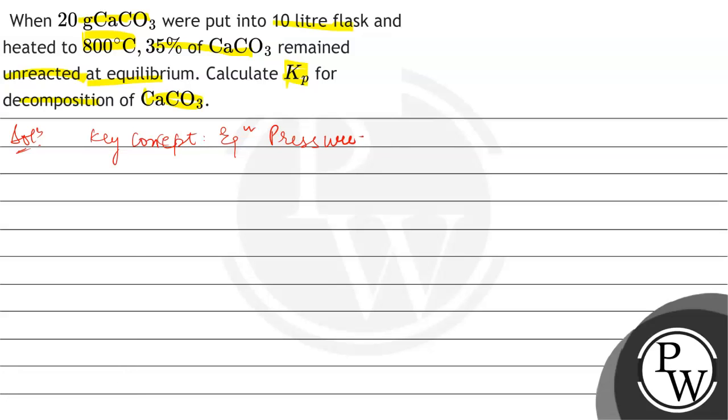First, let's write the given data. The amount of calcium carbonate is 20 grams, volume of the flask is 10 litre, temperature at which the reaction occurs is 800 degree Celsius.